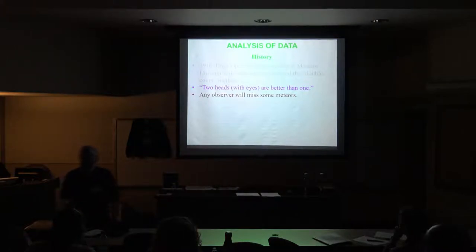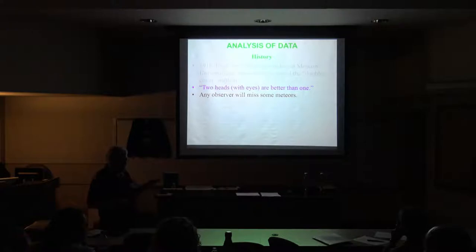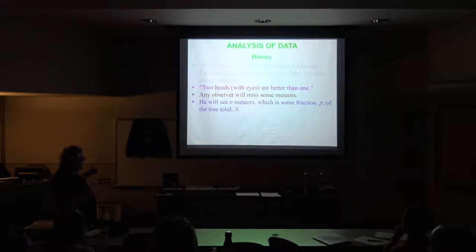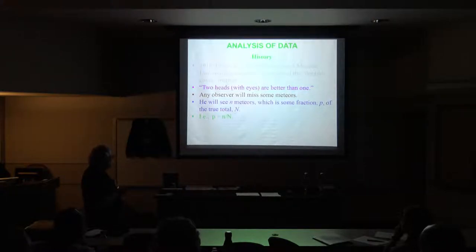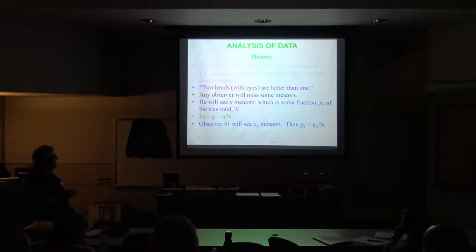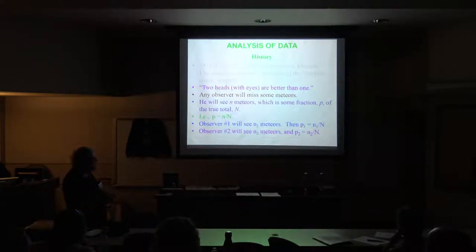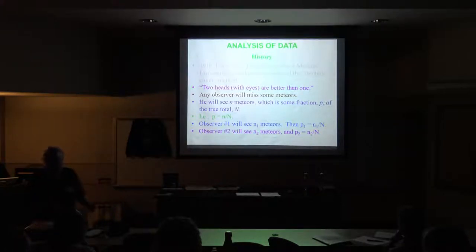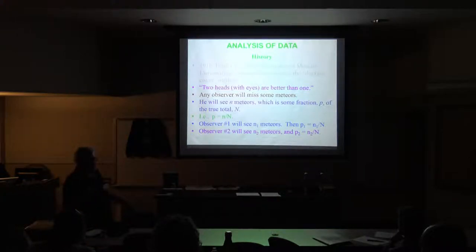Any observer is going to miss some meteors unless they're extraordinarily bright. Any observer will see n meteors, and that's a fraction of the true total N, so the probability p equals n over N — that's the fraction of meteors you will actually see. Observer one will see n₁ meteors, so probability one is n₁ over N, and observer two will see his number of meteors — his perception coefficient is the number he sees out of the total. Nobody's going to see all of them, but there is a total capital N, and each person only sees a fraction.